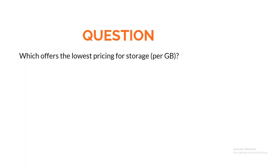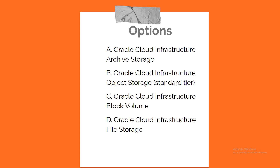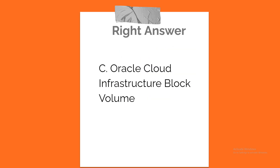Question. Which offers the lowest pricing for storage per GB? A. Oracle Cloud Infrastructure Archive Storage. B. Oracle Cloud Infrastructure Object Storage Standard Tier. C. Oracle Cloud Infrastructure Block Volume. D. Oracle Cloud Infrastructure File Storage. Correct answer: C. Oracle Cloud Infrastructure Block Volume.